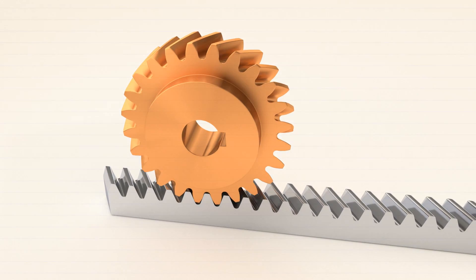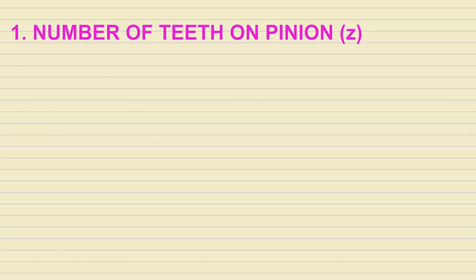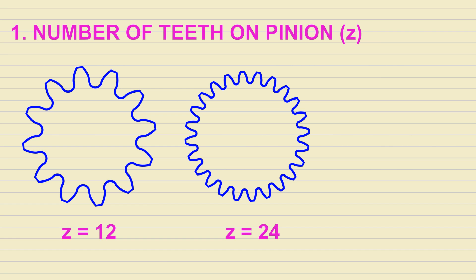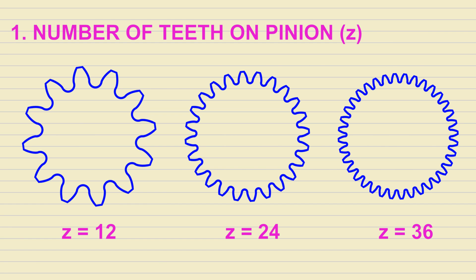The rack and pinion profiles can be fully defined by these five parameters. The first is the number of teeth on the pinion, which is self-explanatory.